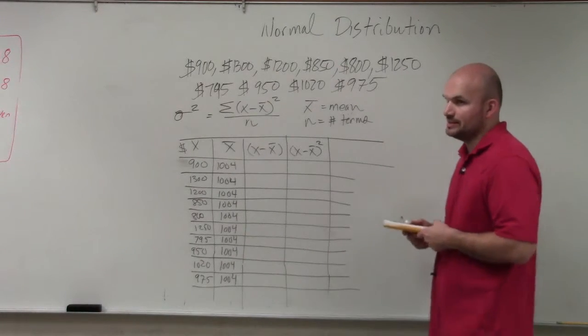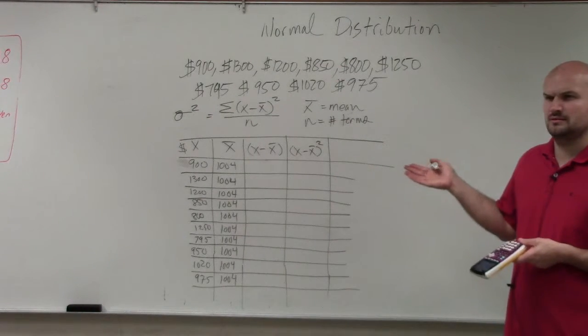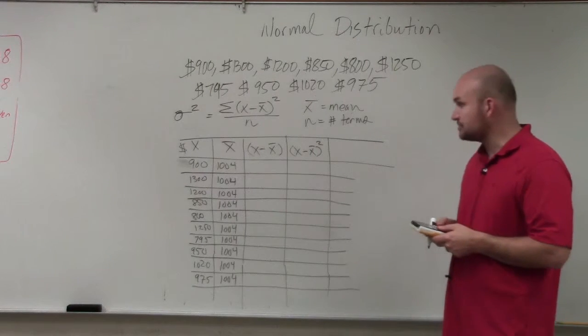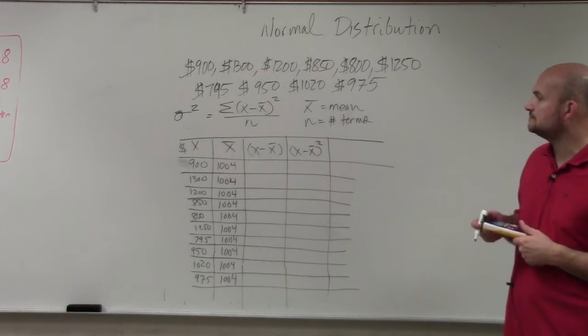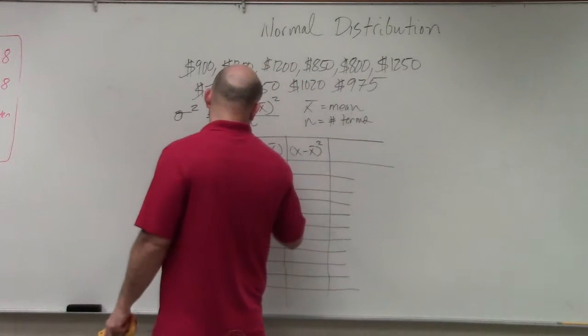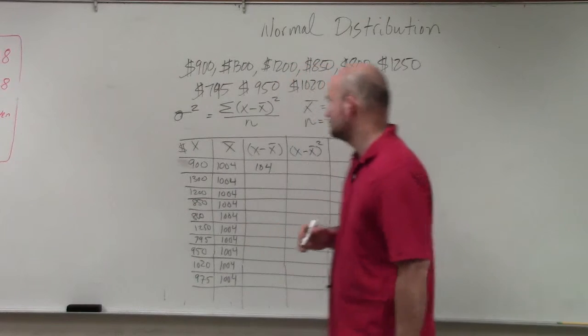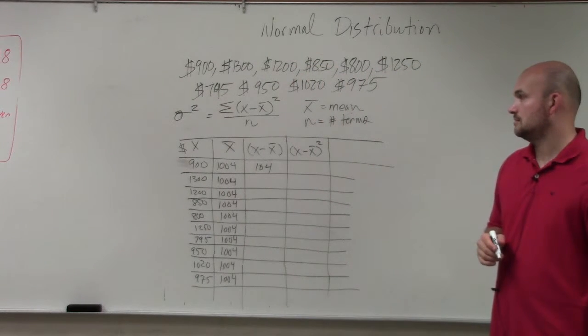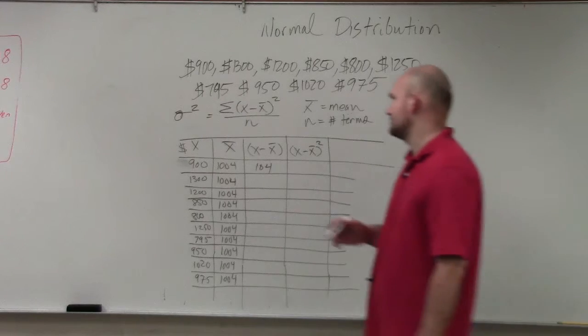Now, the next thing is we're going to be subtracting this. Juno, did you have this answer? Yes, I did. OK. So now we're just going to do the subtraction of our x minus our mean, which in this case would be 104. Correct? Would that be negative? Negative, yes. Negative 104.